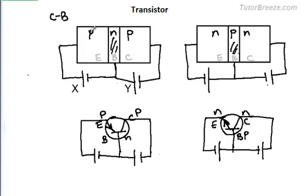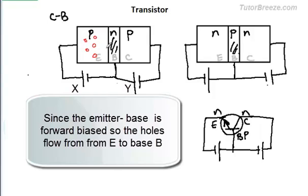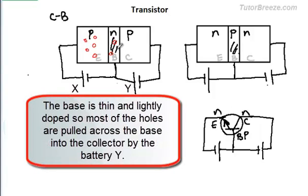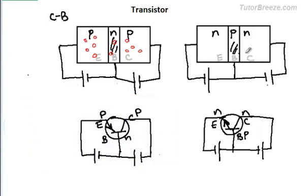Now let's look at the flow of current. In the PNP transistor, the majority carriers are holes. Since the emitter-base junction is forward biased, holes cross over into the base region. But since the base is very thin and lightly doped, most of the holes move into the collector region, drawn by the negative end of the battery. For the NPN transistor, electrons are the majority carriers and will cross into the base region since it is forward biased, being pushed by the negative terminal. Most electrons then cross into the collector region, pulled by the positive terminal.